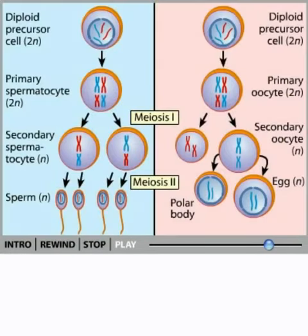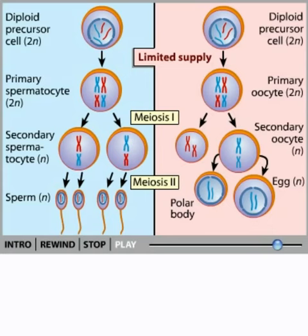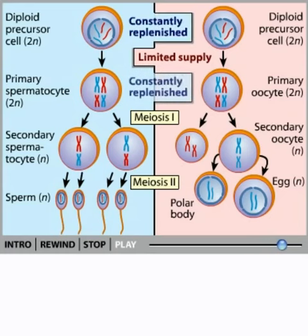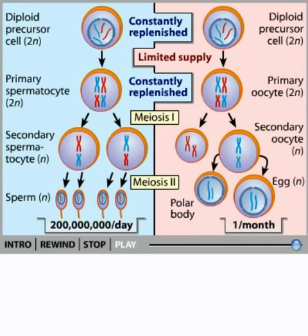Note that the supply of a female's primary oocytes is limited, and once a primary oocyte develops into a mature ovum, it is consequently removed from the supply. In contrast, throughout the life of the mature male, the diploid precursor cells replenish themselves, providing a never-ending source of primary spermatocytes. Also noteworthy is that in a normal 28-day menstrual cycle, a human female produces only one mature egg, while a male produces about 200 million sperm every day.